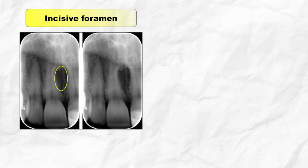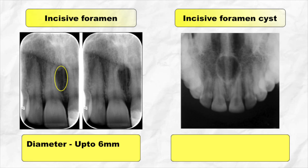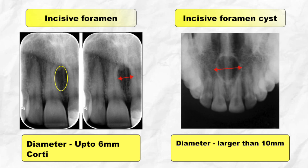Next is incisive foramen cyst. The normal incisive foramen appears on radiograph between the two central incisors as an oval-shaped radiolucency with a largest diameter of 6 mm. When cyst formation takes place, it appears radiographically as a radiolucent lesion larger than 1 cm. The incisive foramen shows cortication on the sides, whereas in case of a cyst, it appears rounded with cortication around the entire lesion.